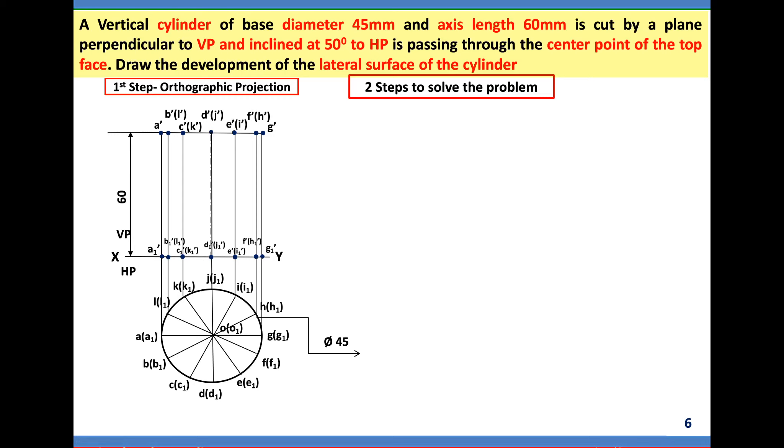Next, I have to introduce the cutting plane. It's perpendicular to VP and inclined at 50 degrees to HP, passing through the center point of the top face. The cutting plane is passing where? Center point of the top face. This line indicates the top face of the cylinder. Use the protractor by making an angle 50 degrees. I have taken a platform because this horizontal line is parallel to top face. I have satisfied the condition given in the problem.